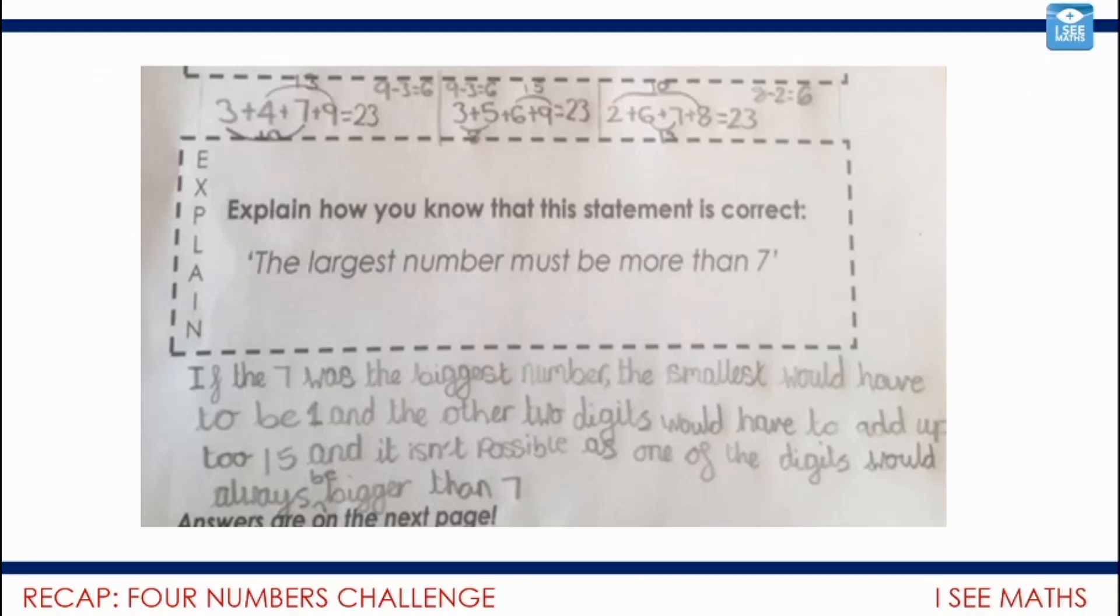Explain how you know this statement is correct. The largest number must be more than 7. If 7 was the biggest number the smallest would have to be 1 and the other 2 digits would have to add up to 15 and it isn't possible as one of the digits would always be bigger than 7. Well done. That is a brilliant explanation.